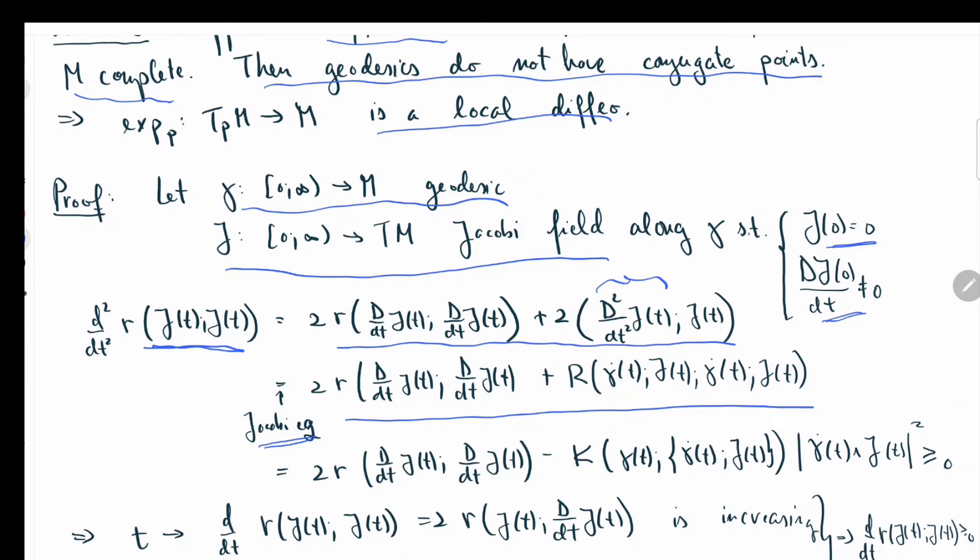After a bit of manipulation, you're going to relate this expression here, the four-term curvature tensor argument, to a sectional curvature, the sectional curvature in the direction of gamma dot t and Jacobian of t. There's a formula that says how you can do that, and this is what you get: sectional curvature at gamma t in the direction of gamma dot t and j(t).